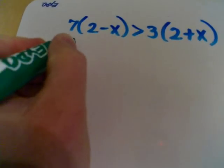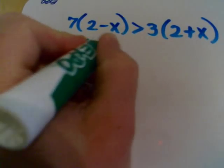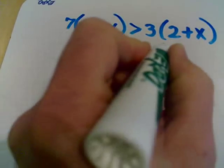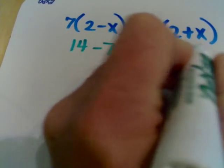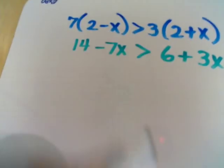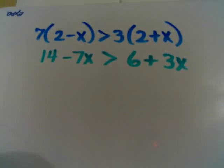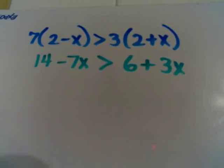We're going to distribute, so we have 14 minus 7x is greater than 6 plus 3x. What we need to do now is get the variables on one side and the constants on the other.